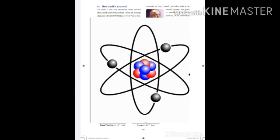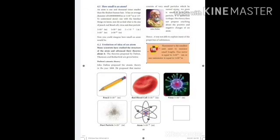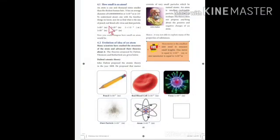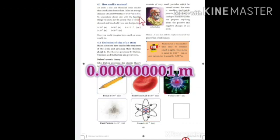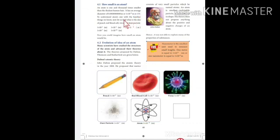Atoms are the smallest, tiny particles — they cannot be seen even through a microscope. In this lesson we are going to study about atomic theories, subatomic particles, atomic number and mass number, and valences. An atom is one thousand times smaller than the thickest human hair. It has an average diameter of 0.00000001, which can be read as 1 into 10 to the power minus 9 meter, or 1 angstrom.